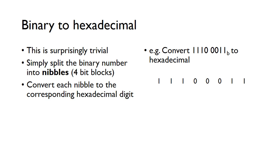So binary to hexadecimal, you might start thinking that's going to be quite difficult. But it's actually very trivial. We just simply need to split this binary number into nibbles, so our four bit blocks, and then we'll just convert each nibble to the corresponding hex digit.